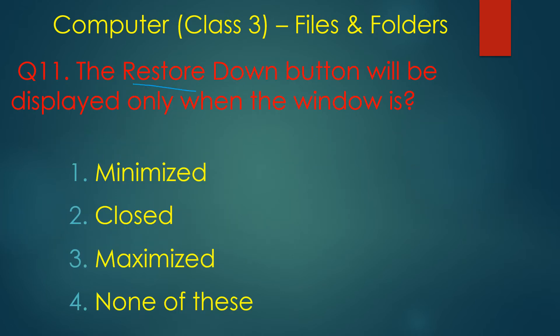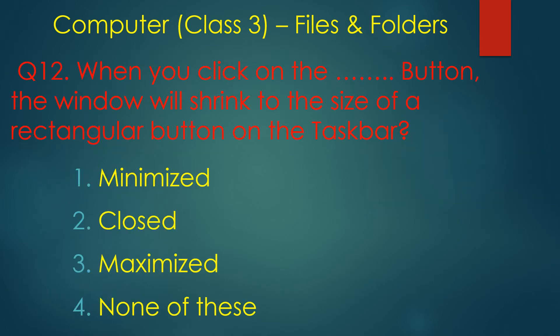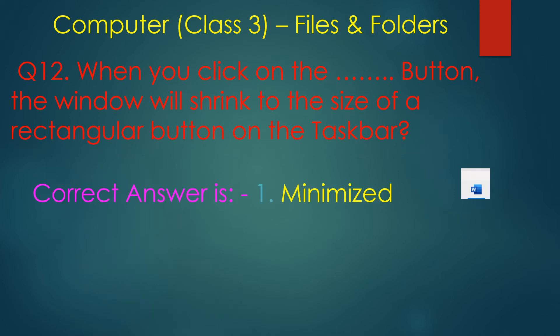The restore down button will be displayed only when the window is maximized. The restore down button restores the window to the size from which it was maximized. When you click the minimize button, the window will shrink to the size of a rectangular button on the taskbar.